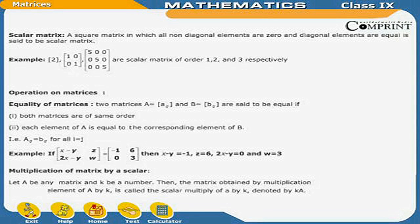Operations on matrices. Equality of matrices: Two matrices A equals to Aij and B equals to Bij are said to be equal if both matrices are of the same order and each element of A is equal to the corresponding element of B. That is, Aij is equal to Bij for all i equal to j. For example, if the matrix [x minus y, z; 2x minus y, w] equals [minus 1, 6; 0, 3], then x minus y equals minus 1, z equals 6, 2x minus y equals 0, and w equals 3.